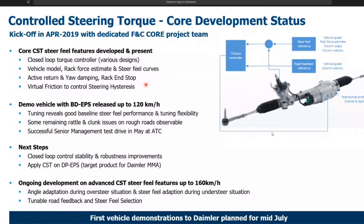Speaking about vehicles, currently we have a demonstration vehicle set up with a ball drive EPS, which is released up to 120 kilometers per hour for test tracks. This vehicle with the current CST setup reveals a good baseline steer feel and performance, and already provides good tuning flexibility. Nevertheless, improvements are on the way, where we have a good collaboration with the vehicle dynamics team.